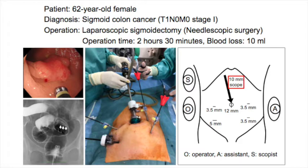A 12 mm port is placed at the umbilicus for a 10 mm scope. A 5 mm port is placed at the right lower quadrant, and 3.5 mm ports are placed at the right and left lateral and left lower quadrants.